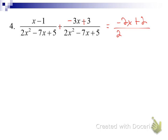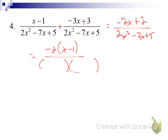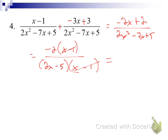We get negative 2x + 2 over 2x² minus 7x plus 5. We factor out negative 2 from the numerator to get negative 2 times (x − 1). In the denominator, 2x² minus 7x + 5 factors to (2x − 5)(x − 1). We've got an (x − 1) in the numerator and denominator, so we divide those out and get negative 2 over (2x − 5). Not any tougher with subtraction.